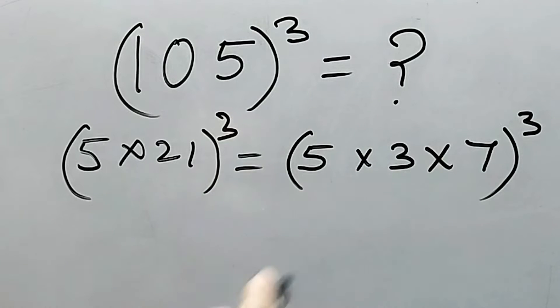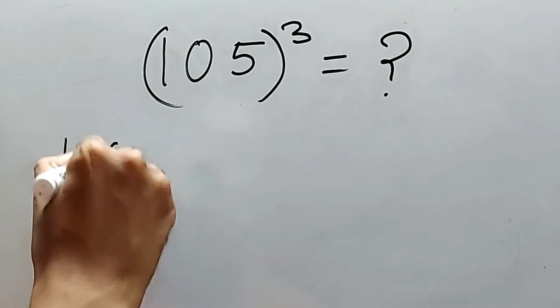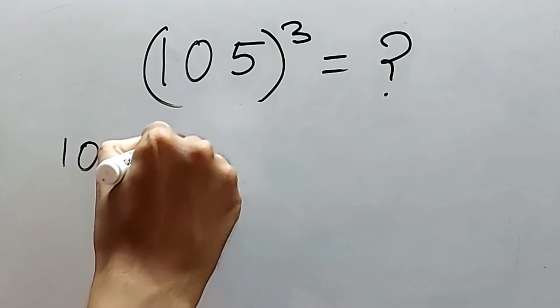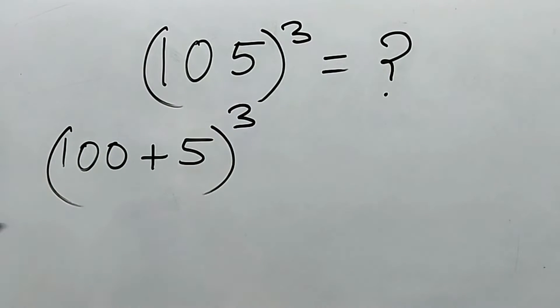So the right way will be 100 plus 5 whole cube. Seeing this we can find that it is a plus b whole cube, and immediately we can recognize the formula a cube plus b cube plus 3ab into a plus b.